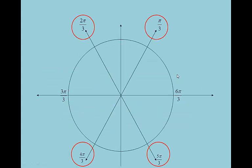Now we're going to start asking equation questions — find the value of x or the angle that makes a true statement. Let's start by looking at the π/3 angles. We always start at 0 and then count: π/3, 2π/3, 3π/3 is a good resting place, 4π/3, 5π/3, and we're back to 6π/3. Those are the π/3 angles — the 60-degree angles. Remember, π is 180 degrees, so π/3 is 60 degrees.